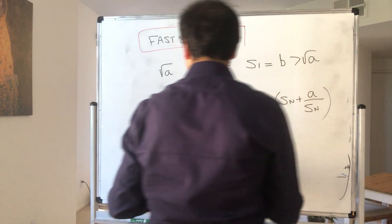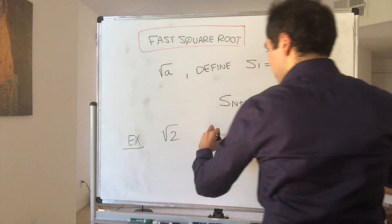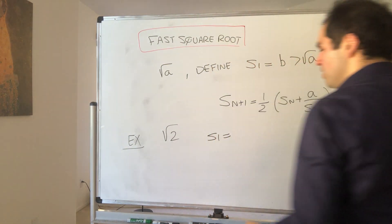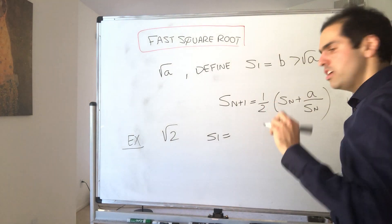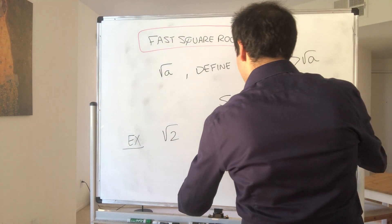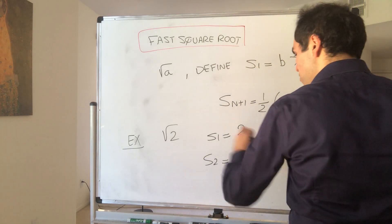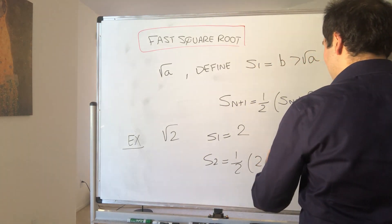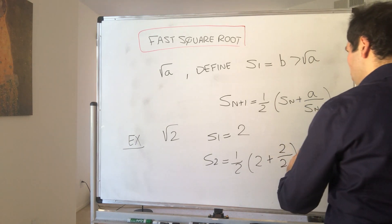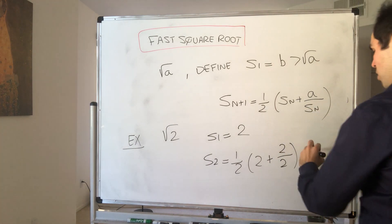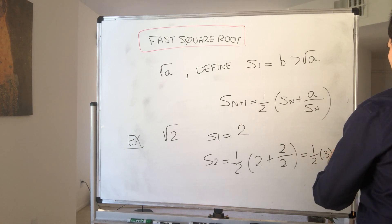To illustrate how fast this is, suppose you want to calculate the square root of two. Then s_1 can be any number bigger than the square root of two — let's just say two. Then s_2 is just the average of two and a over our number, so two over two, and that becomes one-half times three, which is 1.5.